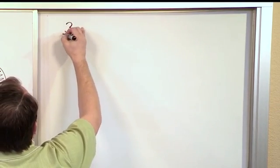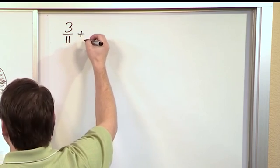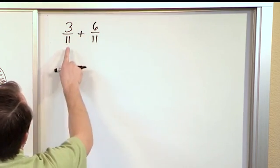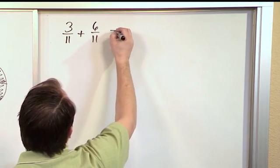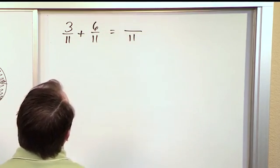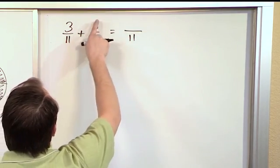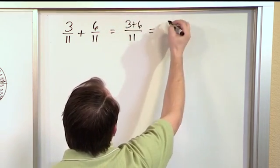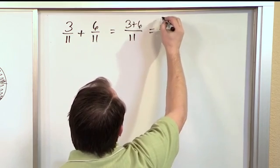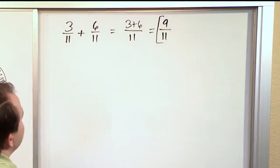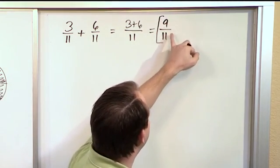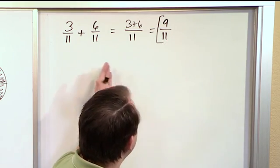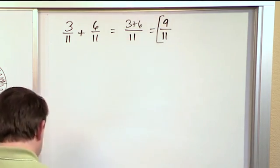What if we have three-elevenths plus six-elevenths? First thing you check: is the denominator the same? In this case it is, so we just keep the eleven on the bottom. Now we add the numerators: three plus six is nine. You keep it over eleven — nine-elevenths. You can check and see if you can divide top and bottom by a number evenly, and you can't. So that's already simplified.